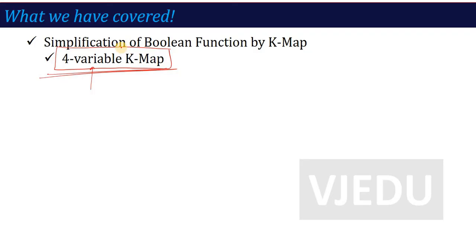Why do I say that? Because now we have to do 5 variables and 6 variables. In those, you will see that 4 variables is the basic one. If it doesn't come to me, then I will not be able to do 5 or 6 as well. So I recommend that if you remember 4 variables, then you will do 5 variables and 6 variables. Otherwise, first revise your 4-variable K-map and then come to the 5-variable K-map.